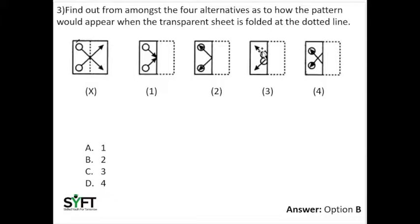In the third option the positions of the circles have been changed, so this option is not the answer. In the fourth option the circles are moved towards the center, so this wouldn't be the answer either. In option one, the arrows from the other part of the paper when folded don't come towards the same part — they would go to the opposite part — but in option one the arrow points the same direction as in figure X. In option two, the arrows in the second part point towards the other direction, therefore option B is the correct answer.